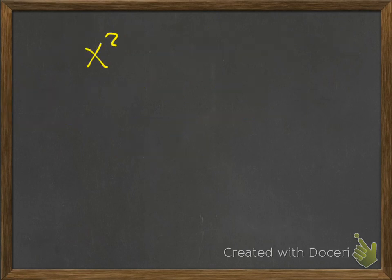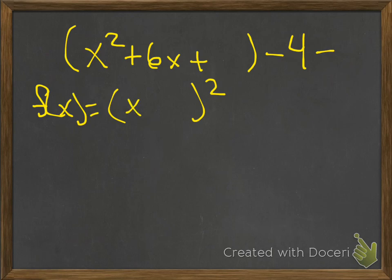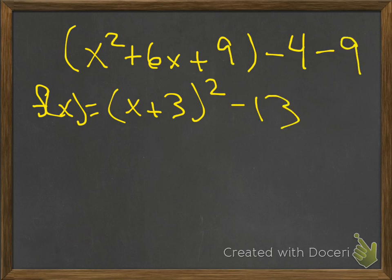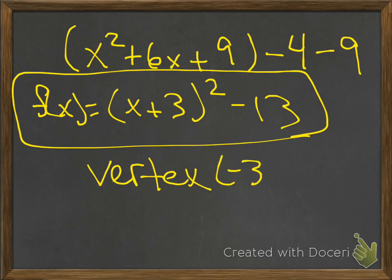Number 24: x squared plus 6x plus space, minus 4. 6 divided by 2 is 3, so x plus 3 in parentheses. 3 squared is 9 — put 9 in both spots. Negative 4 minus 9 gives negative 13. So the vertex form is (x + 3)² − 13, with vertex at (−3, −13).